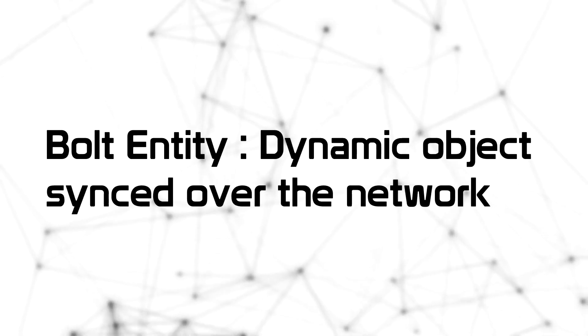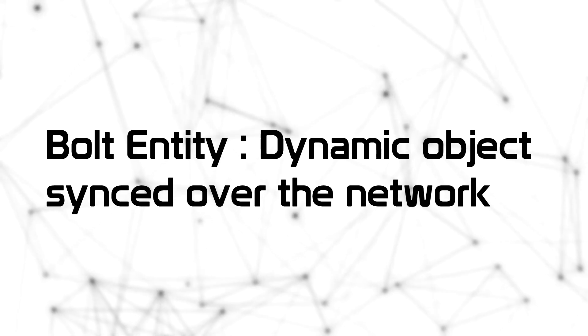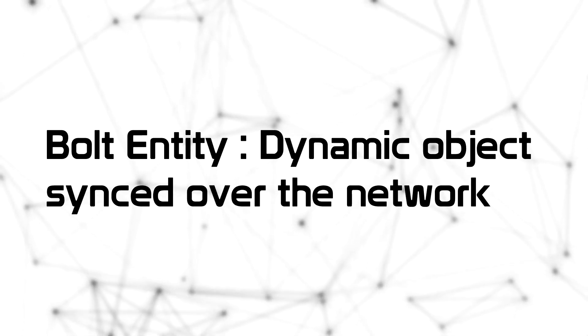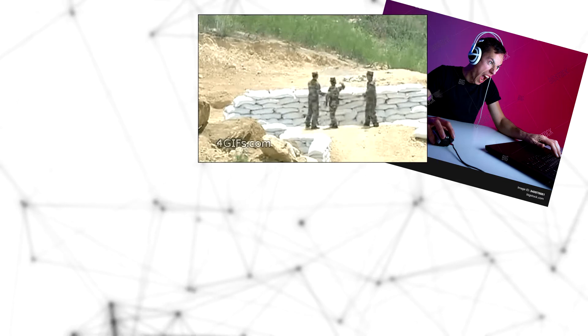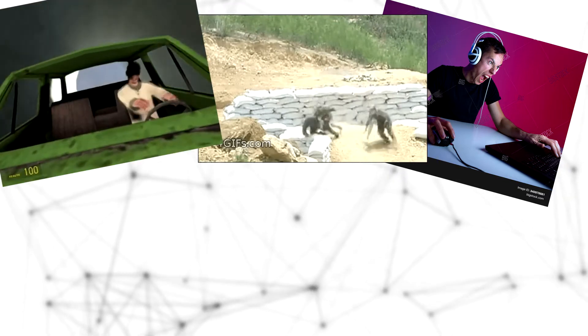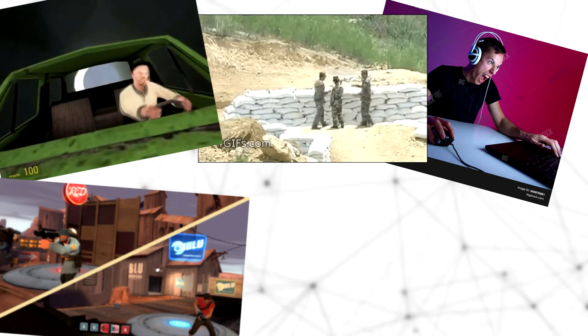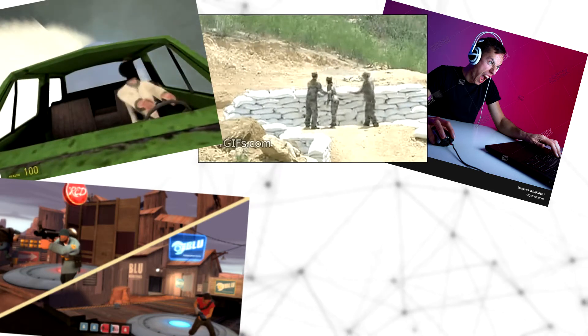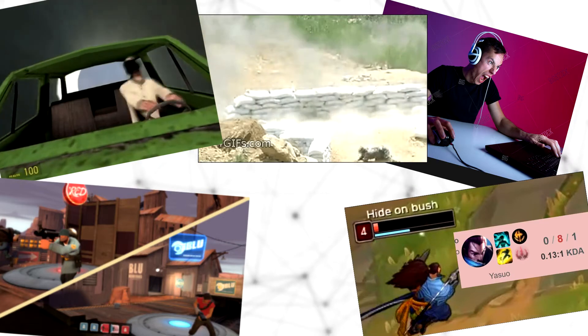My definition of Bolt Entity is pretty simple. It's a dynamic object synchronized over the network. That means it encompasses players, objects that we throw like grenades, vehicles, goals like payloads or capture points, or even game controllers which handle points and other things like timers, etc.